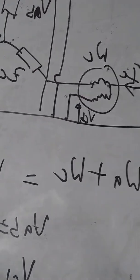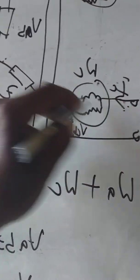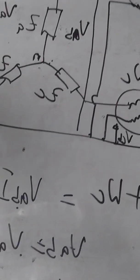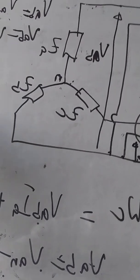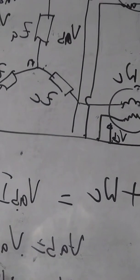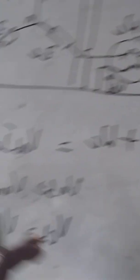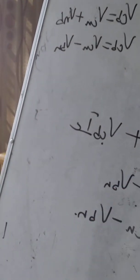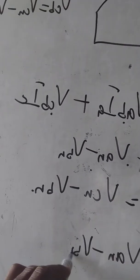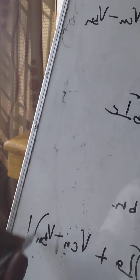Similarly, V_CB is equal to V_CN minus V_BN. So substituting into the total wattmeter reading, W_A plus W_C equals (V_AN minus V_BN) · I_A plus (V_CN minus V_BN) · I_C.